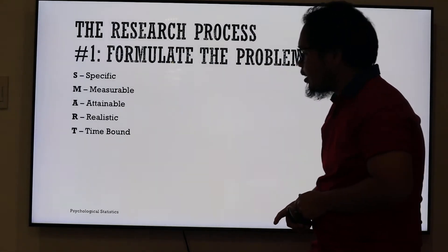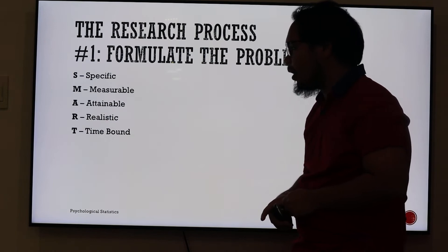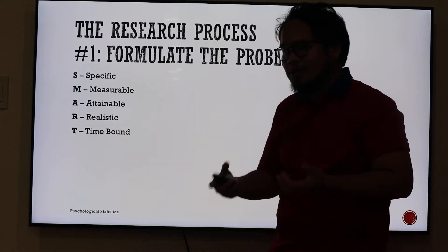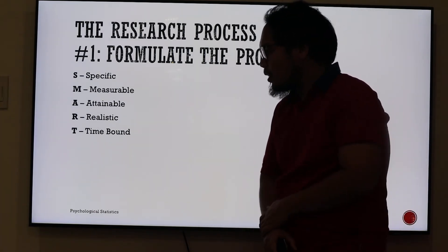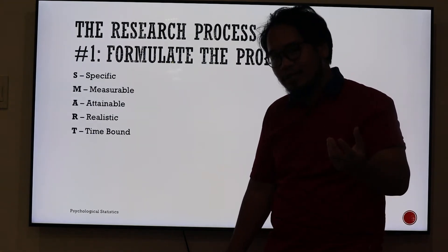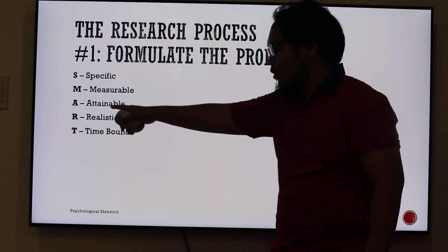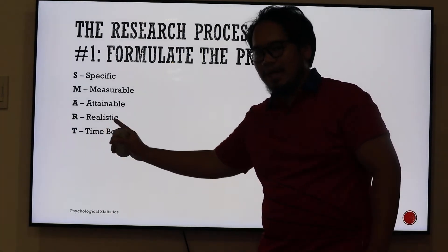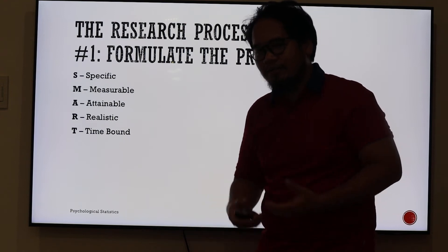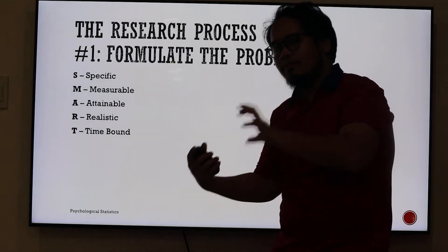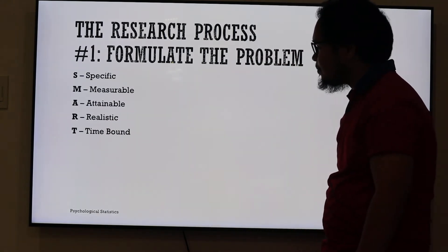M is Measurable. The problem which you want to answer should of course be measurable; otherwise, we cannot deal with numbers, and hence we cannot use statistics. A is Attainable — in practical terms, you must perform and finish your thesis in two semesters, so make sure it's attainable. Make sure you can finish it within the given time frame. And R is Realistic — enough said about that.